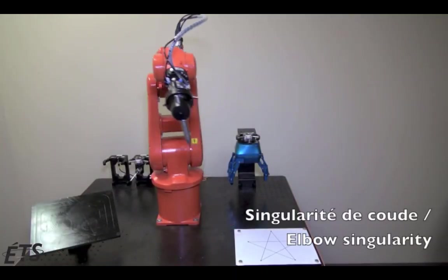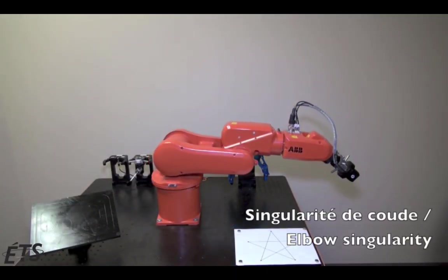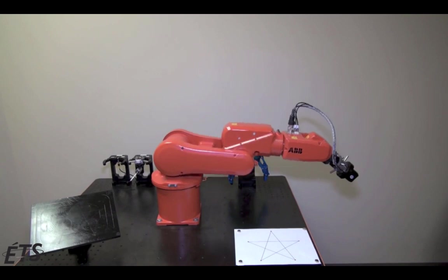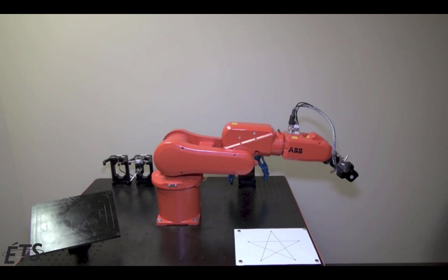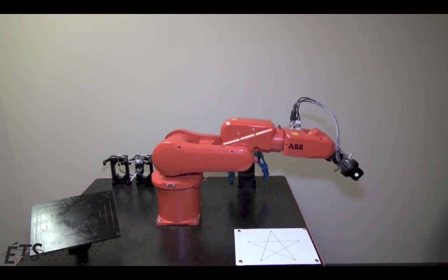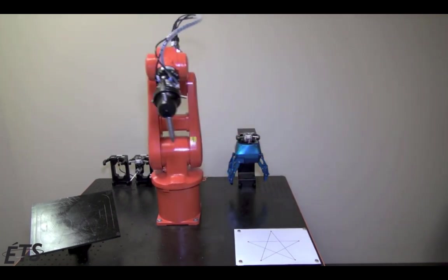And these final ones are called elbow singularities. These happen when the center of the robot's wrist lies in the same plane as joints two and three. These elbow singularities look like the robot has reached a little too far, causing that elbow to lock in position.